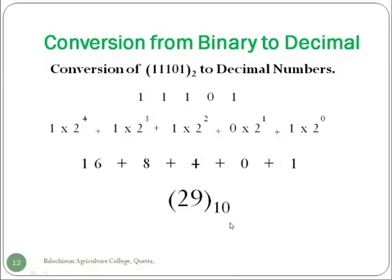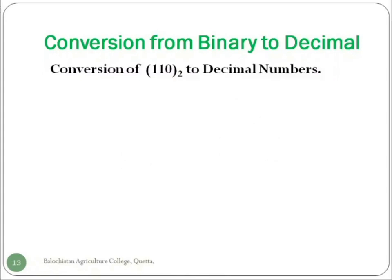So in this way we can convert any binary number into decimal number. We take another example and try to convert this following number into decimal number. So let's start: 0 times 2, 1 times 2, 1 times 2, 1 times 2. The first step is multiplying each digit of the binary number with 2.